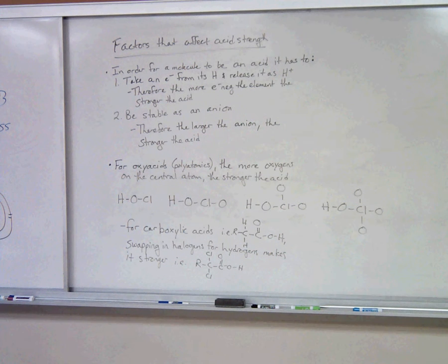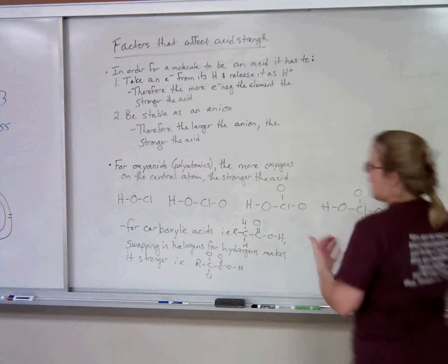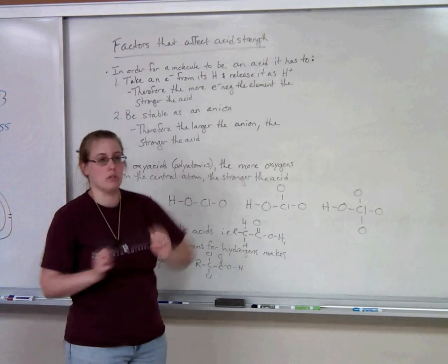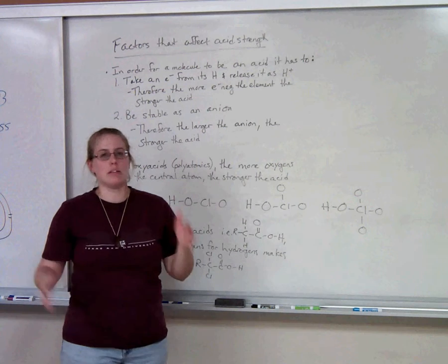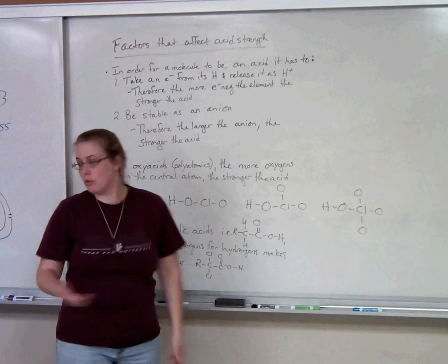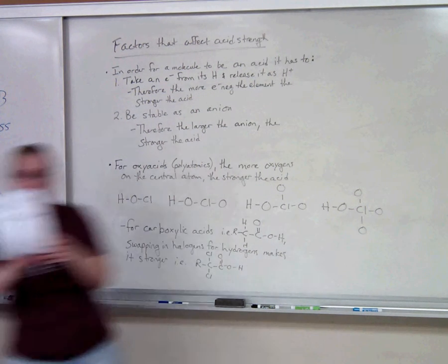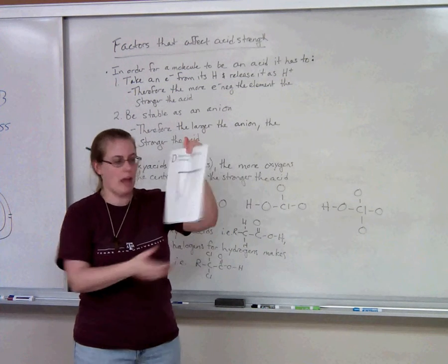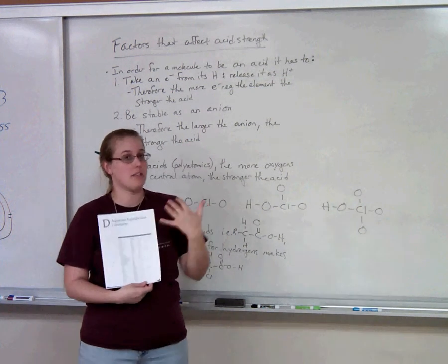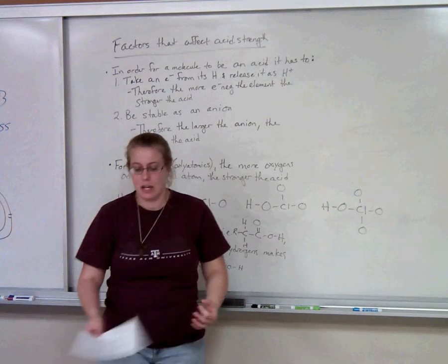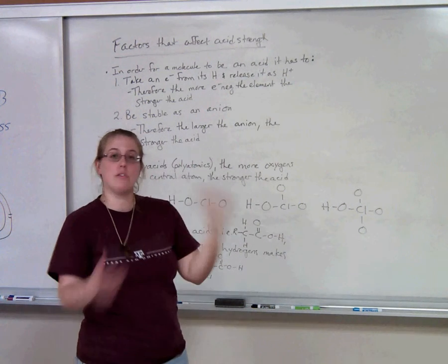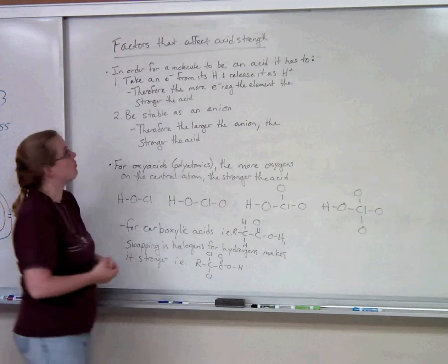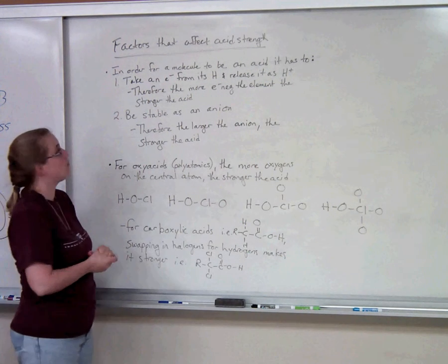Welcome to the video on how to figure out whether an acid is stronger than another acid. You have your list of seven strong acids, so those are strongest. But of all the weak acids, which one's stronger than another one? You could use your Appendix D and just look up the Ka — the larger the Ka, the stronger the acid. But let's say you don't have access to Appendix D; you're in the middle of a test and they give you two acids and ask which one is stronger. Here are some rules of thumb.